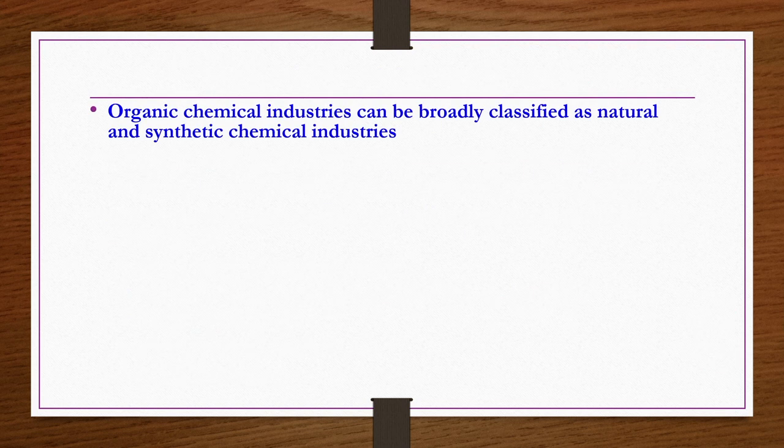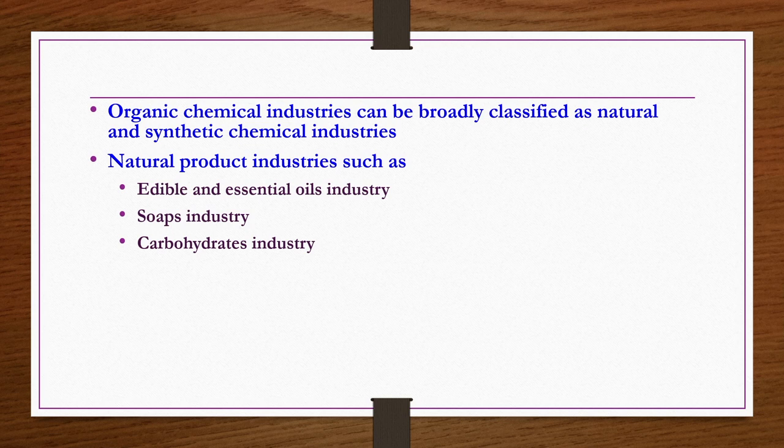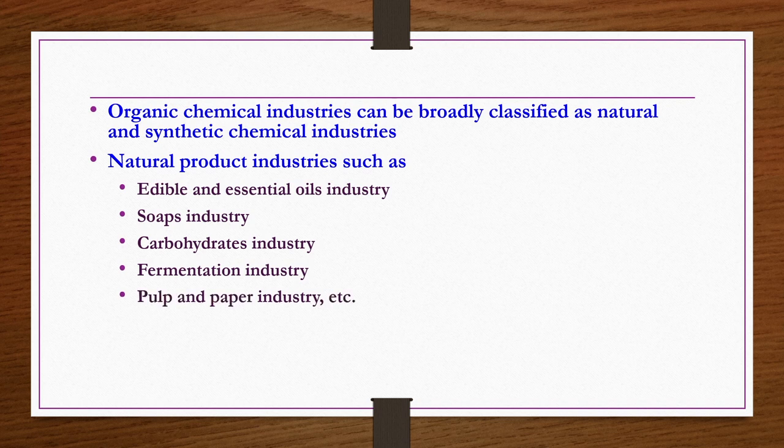Based on source and method of production, organic chemical industry can be natural or synthetic. Natural product industries get their products from natural sources — for example, vegetable oils obtained from seeds by extraction followed by hydrogenation. Some natural product industries are edible and essential oils, soaps, carbohydrate industries (sugar, starch, cellulose), fermentation industries producing ethanol and butanol, and pulp and paper industry.